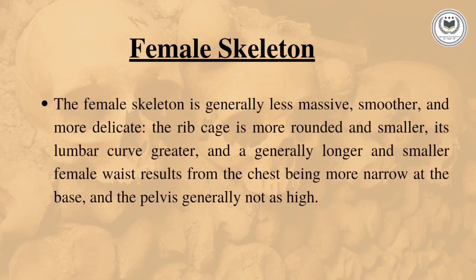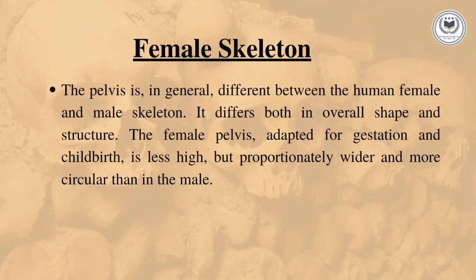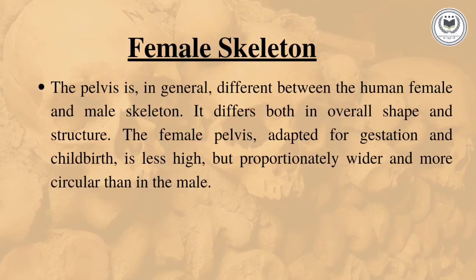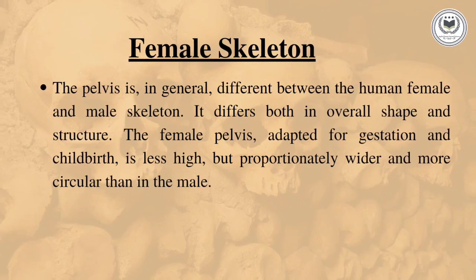Now we will study the female skeleton. The female skeleton is less bumpy and much smoother compared to the male skeleton. The ribcage is more rounded and smaller, and the lumbar curve is generally greater. The pelvis region in the female skeleton is the main feature used for differentiation between the male and female skeleton.